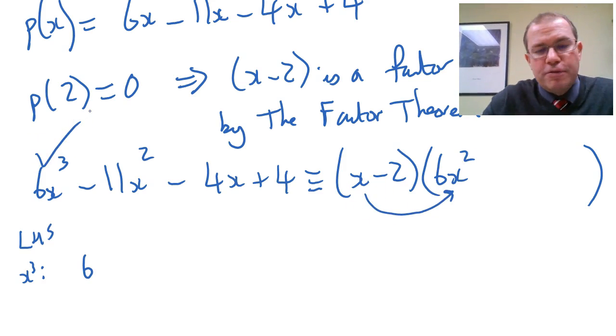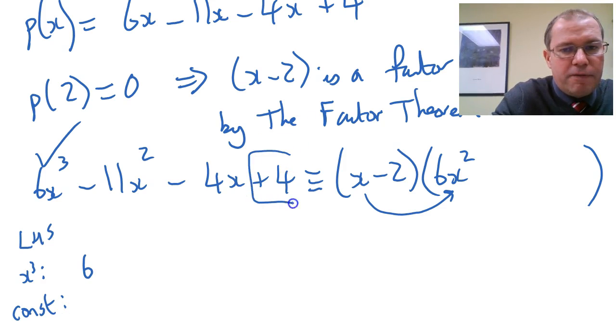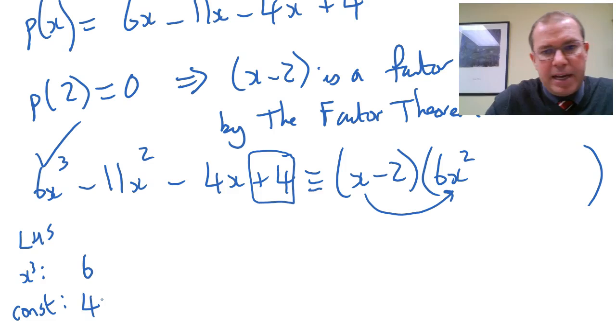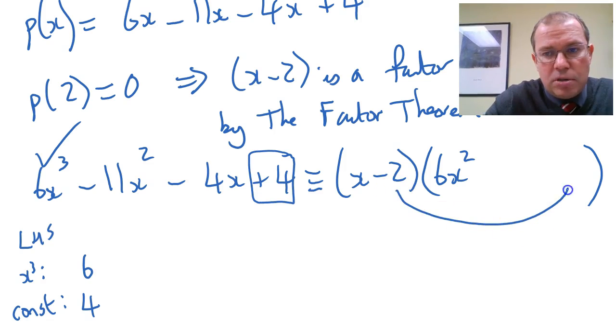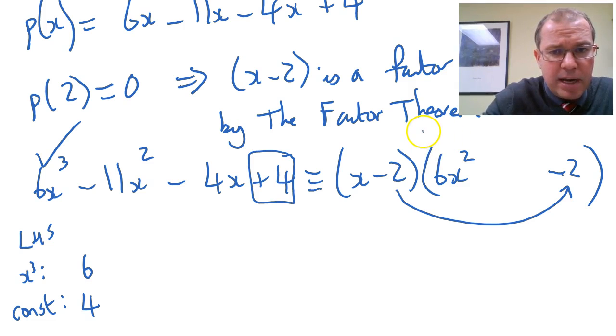So the first term is always really easy. The constant term is also really easy. If we equate constant terms, you can see I've got 4 there, so I have to have 4 on the right-hand side if it's identical. The only way to generate your constant term is negative 2 times whatever number I put in as the question mark there. So clearly if I want a positive 4, I know this has to be a negative 2.